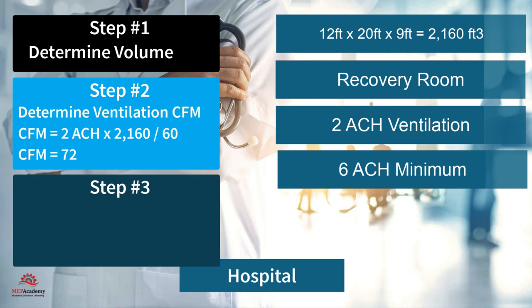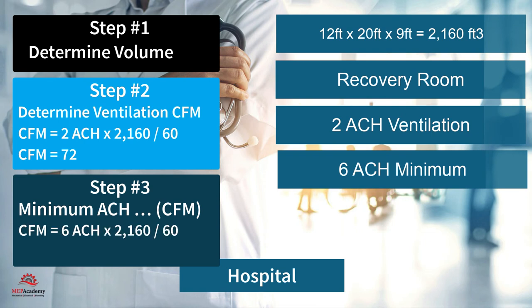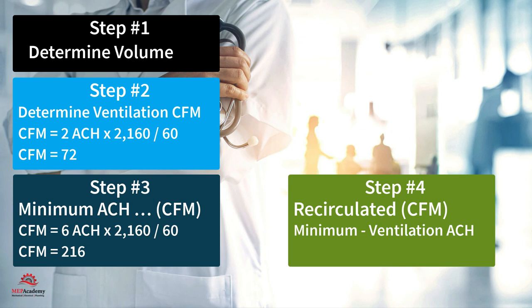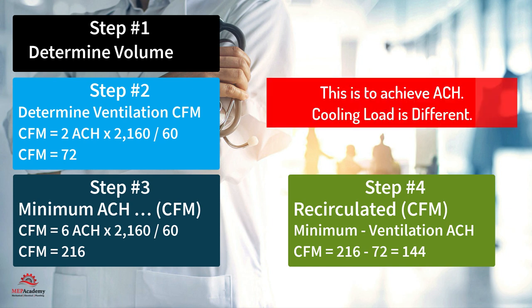Step 3 is to determine the required minimum CFM. CFM equals six air changes times 2,160 cubic feet divided by 60, giving CFM equals 216. Step 4 is to determine the required CFM to be recirculated through the HVAC equipment. Minimum air changes per hour minus ventilation air changes per hour equals recirculated air changes per hour. Recirculated CFM equals minimum CFM of 216 minus ventilation CFM of 72, giving recirculated CFM of 144. You can see that the same size room at two different air change rates makes a huge difference in the volume of air that must be circulated.